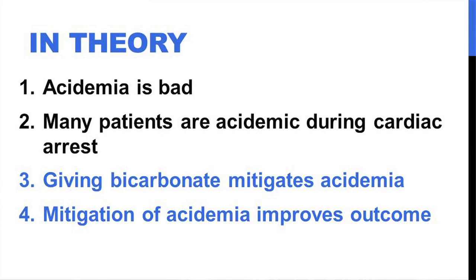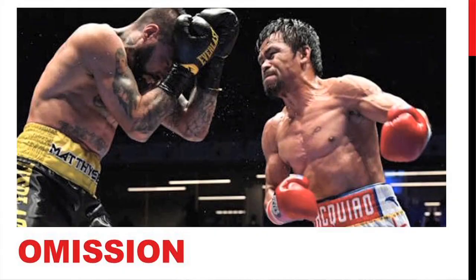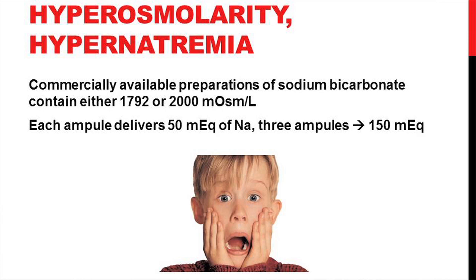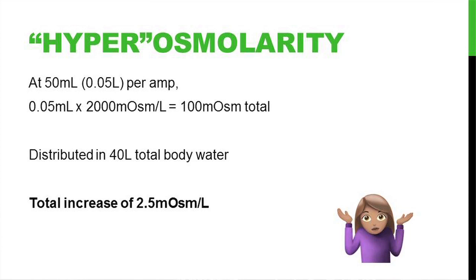Those who argue against bicarb say there's a risk of an osmolar load and hypernatremia. An amp of bicarb has 2,000 milliosmoles per liter, and if you give 50 milliequivalents times 3 amps, you're giving 150 milliequivalents of sodium. But if you actually do the math, assuming a total body water of 40 liters, for every amp you're giving them you increase their osmolality by approximately 2.5 milliosmoles per liter, and for 3 amps the total sodium increase is about 0.56 milliequivalents per liter.